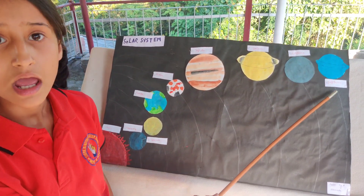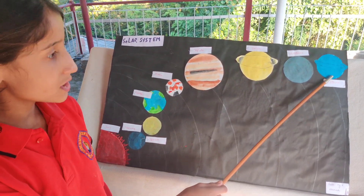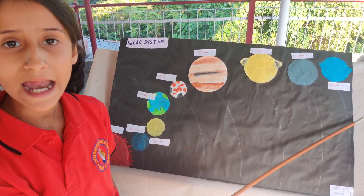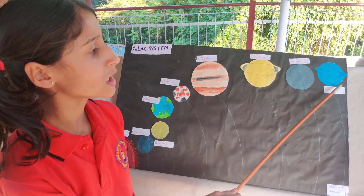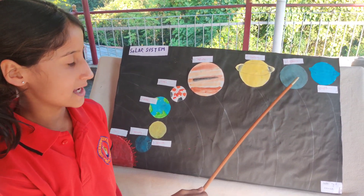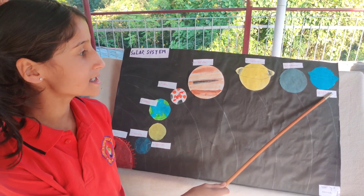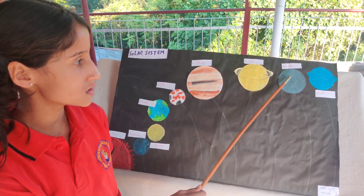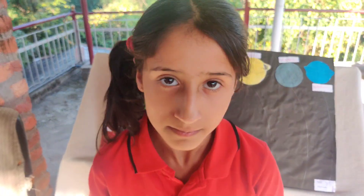Neptune. Neptune is the last planet from the sun. It looks like Uranus, that's why it can be considered as Uranus's twin. Thank you.